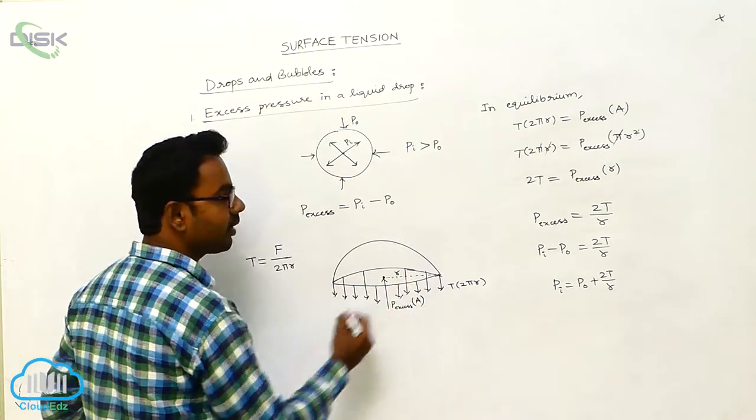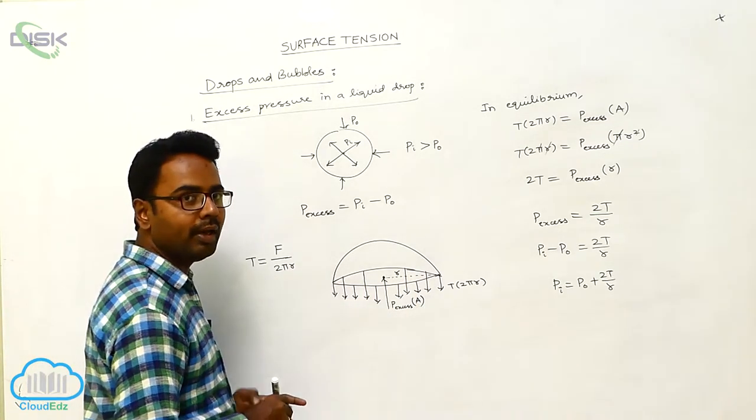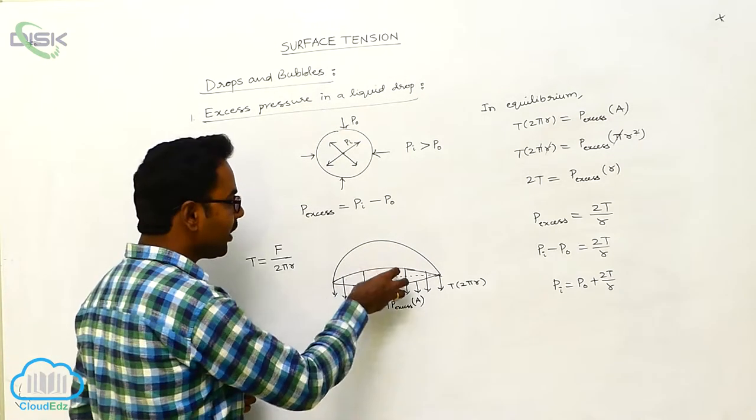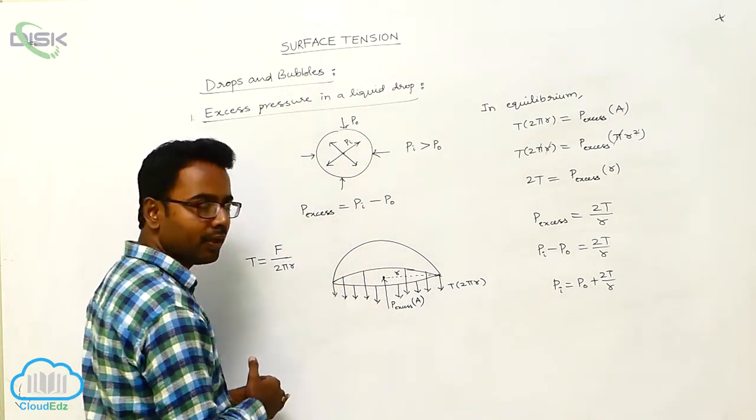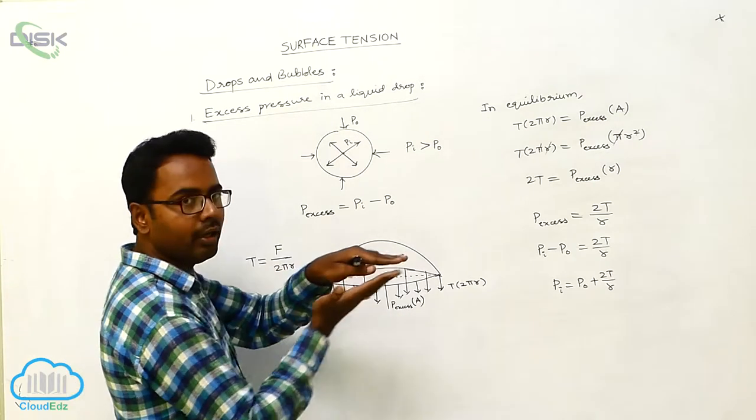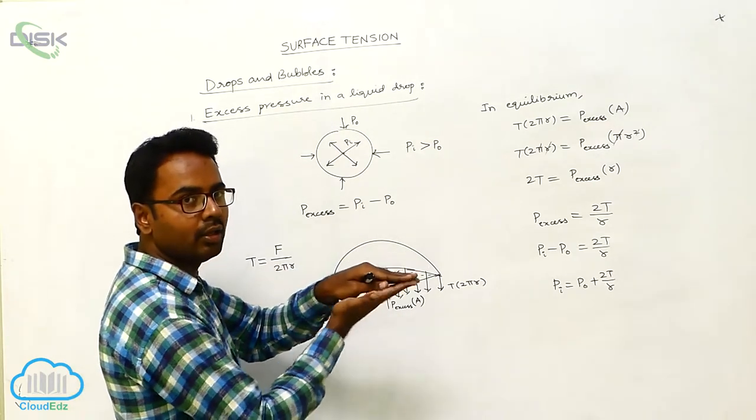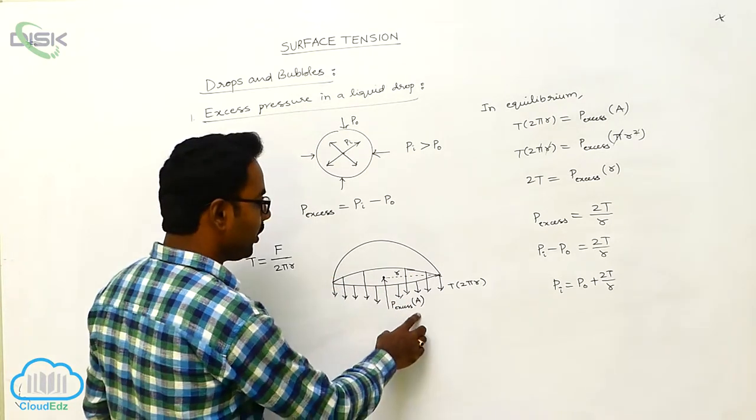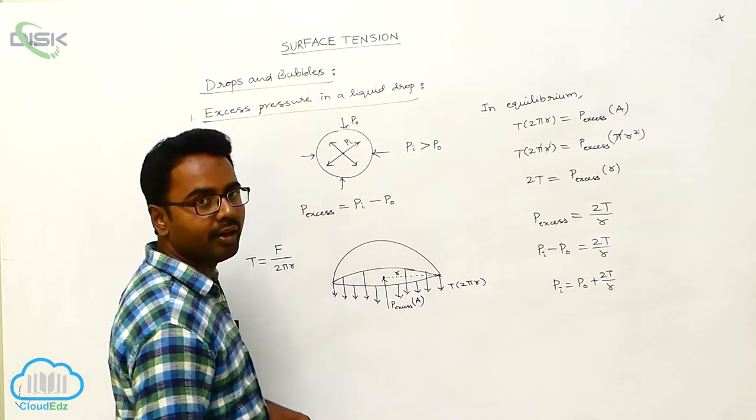Here we suppose r is the radius of the drop, and also the force due to excess pressure acting on it in upward direction. Inside it excess pressure is Px. Now it is acting on the area A. So Px into A it is acting in an upward direction.